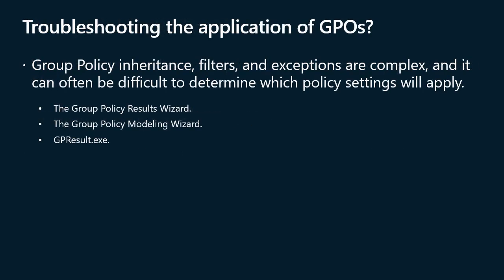Group policy inheritance, filters, and exceptions are complex, and it can often be difficult to determine which policy settings will apply. Resultant Set of Policy is the net effect of GPOs applied to a user or computer, considering GPO links, exceptions such as enforced and block inheritance, and the application of security and WMI filters. Resultant Set of Policy is also a collection of tools you can use to evaluate, model, and troubleshoot the application of group policy settings. It can query a local or remote computer and report the exact settings that apply, and it can model anticipated policy settings under various scenarios — such as moving an object between OUs or changing group membership.